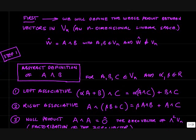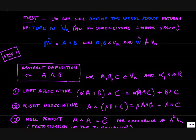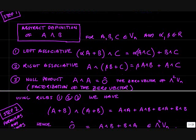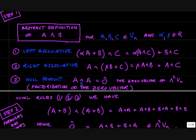So let's go ahead with the task of defining the wedge product between vectors in Vn. Notice that this wedge product is going to give you a vector in some other space — in general, the wedge product will not be an element of Vn. Here is an abstract definition of the wedge product. For a, b, and c vectors in Vn, and scalars (real numbers) alpha and beta, the wedge product is going to be left associative, right associative, and it has a null product: A wedge A equals zero.